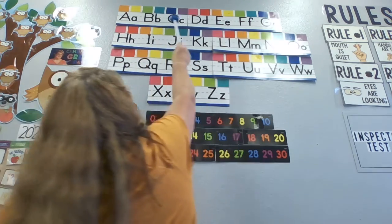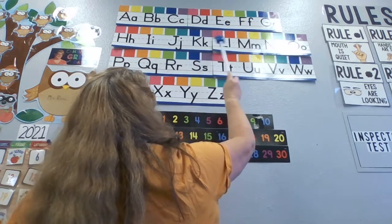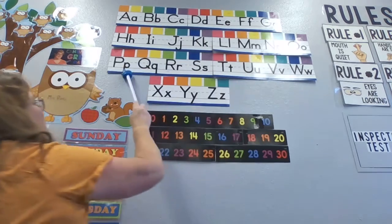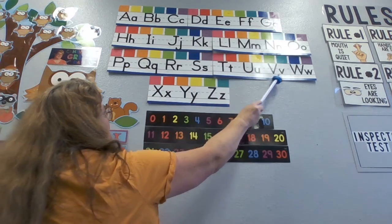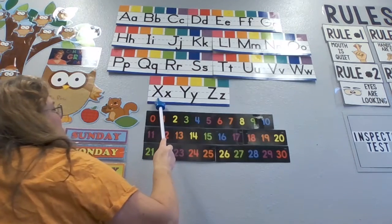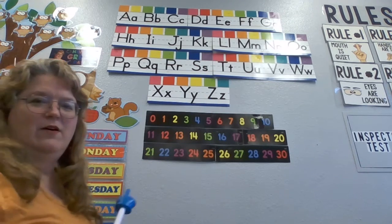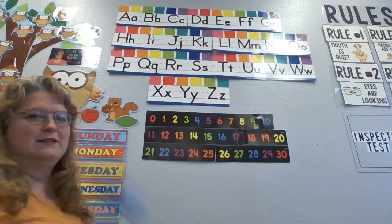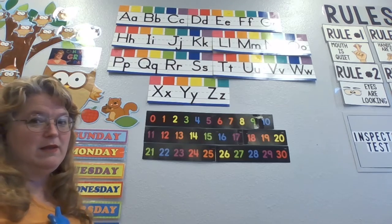A, B, C, D, E, F, G, H, I, J, K, L, M, N, O, P, Q, R, S, T, U, V, W, X, Y, and Z. Now I know my ABCs. Next time won't you sing with me.